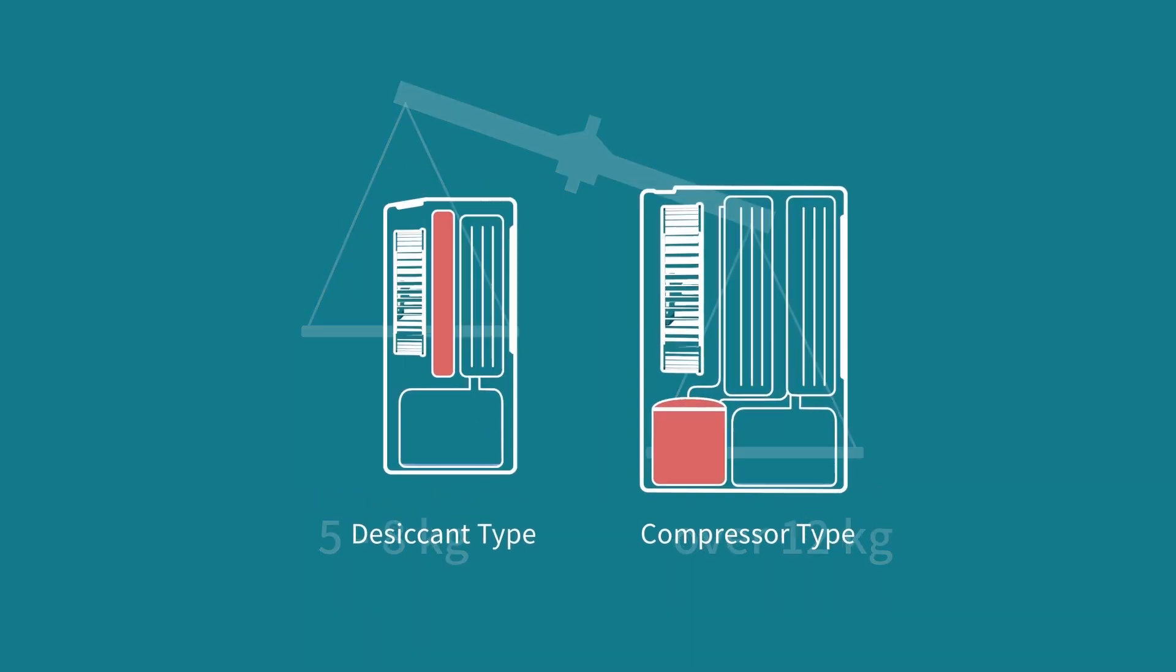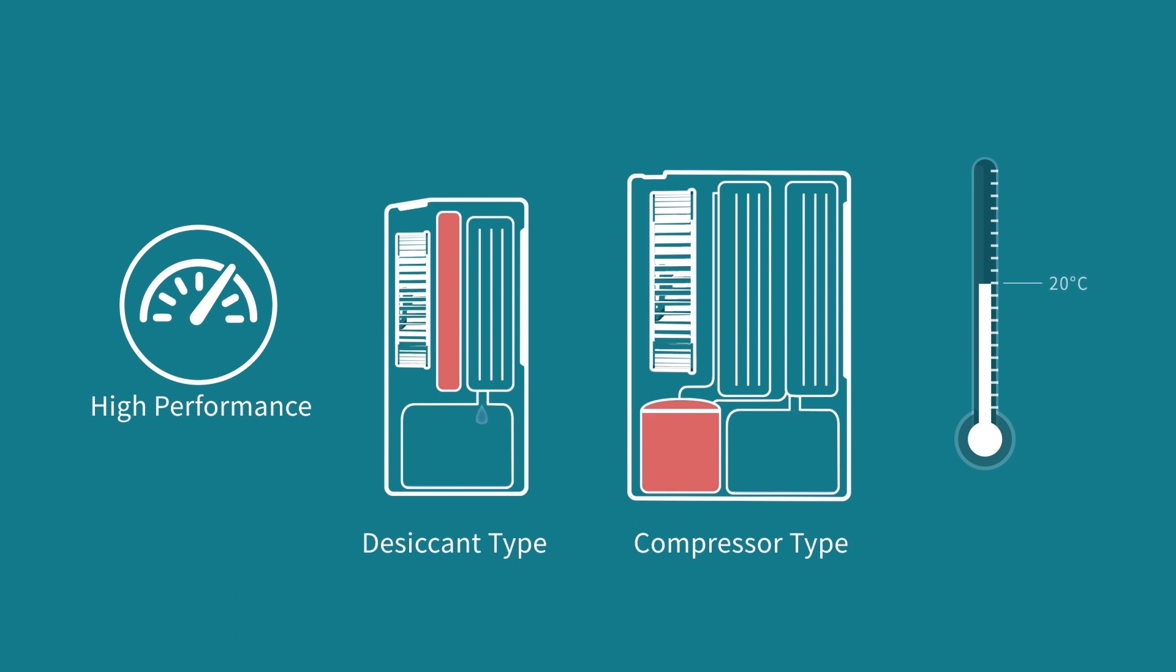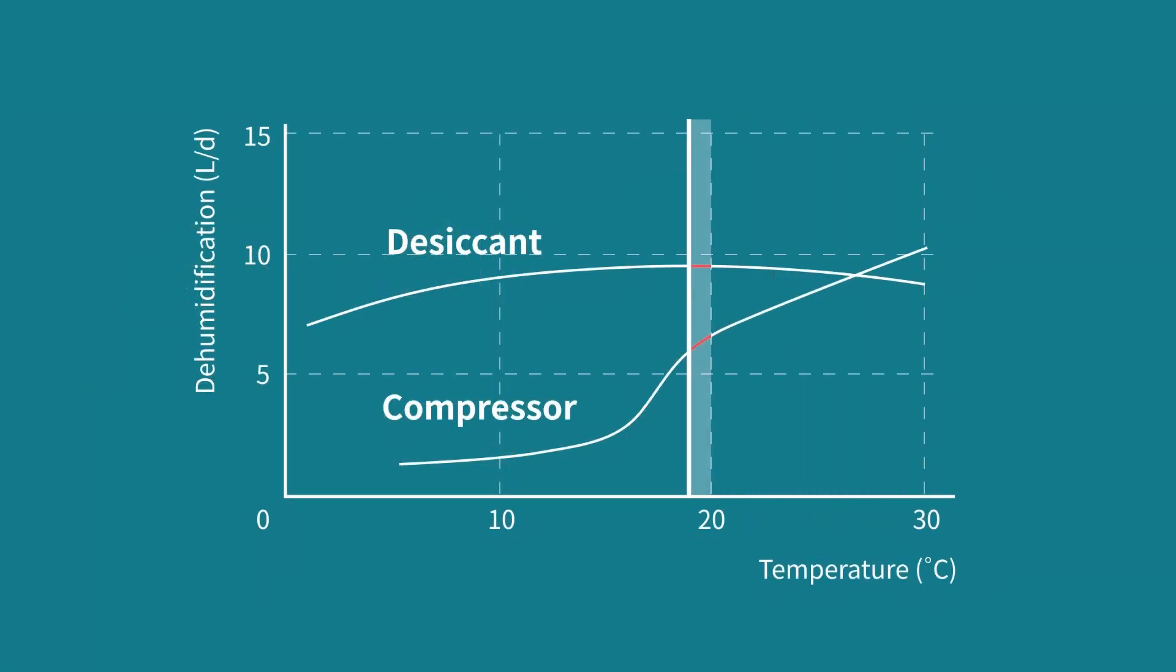Desiccant type remains high performance even in low temperatures from 1 to 15 degrees. The performance of compressor dehumidifiers will drop along with temperature. Under 15 degrees, it would need to defrost and stop dehumidifying.